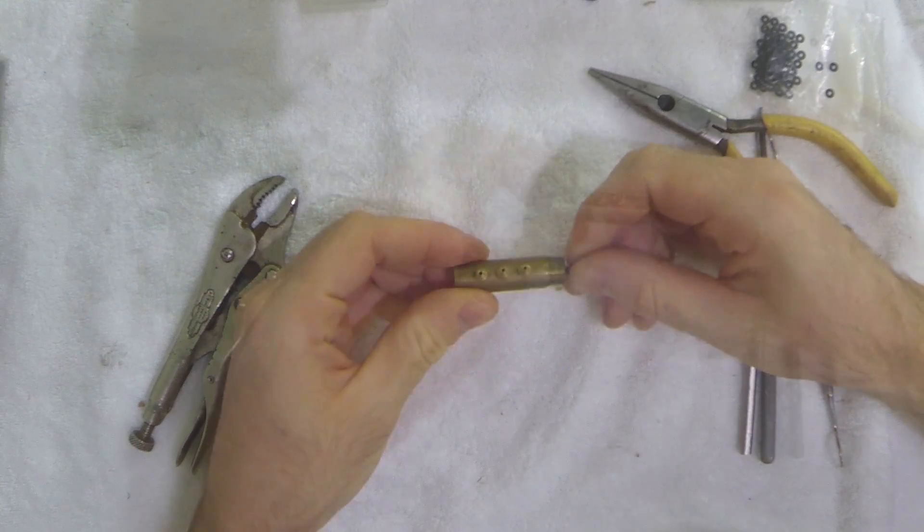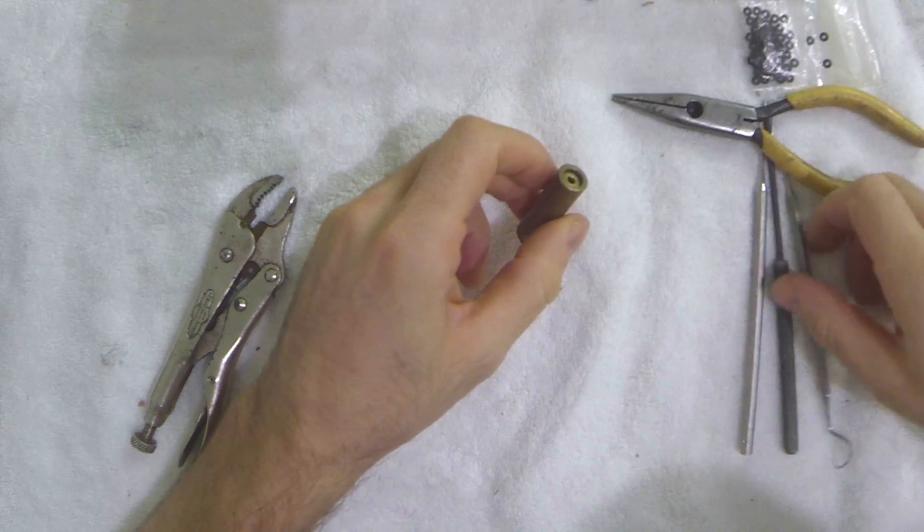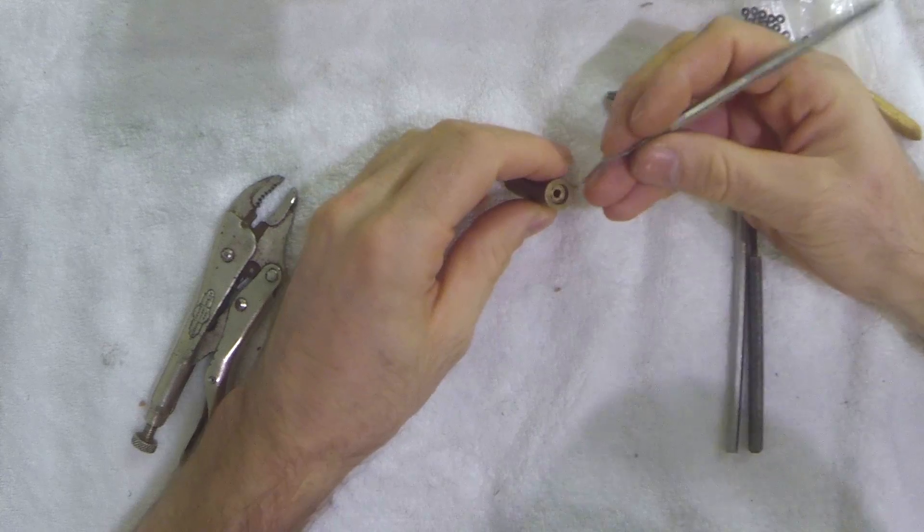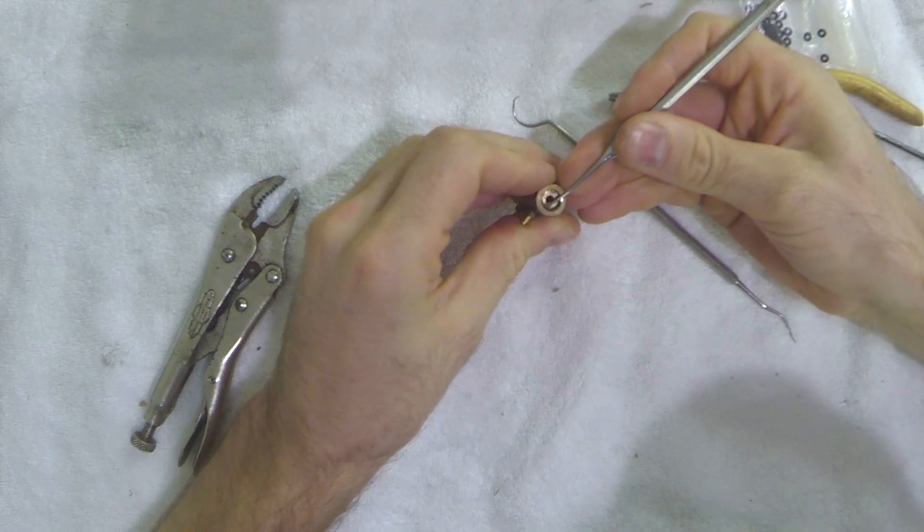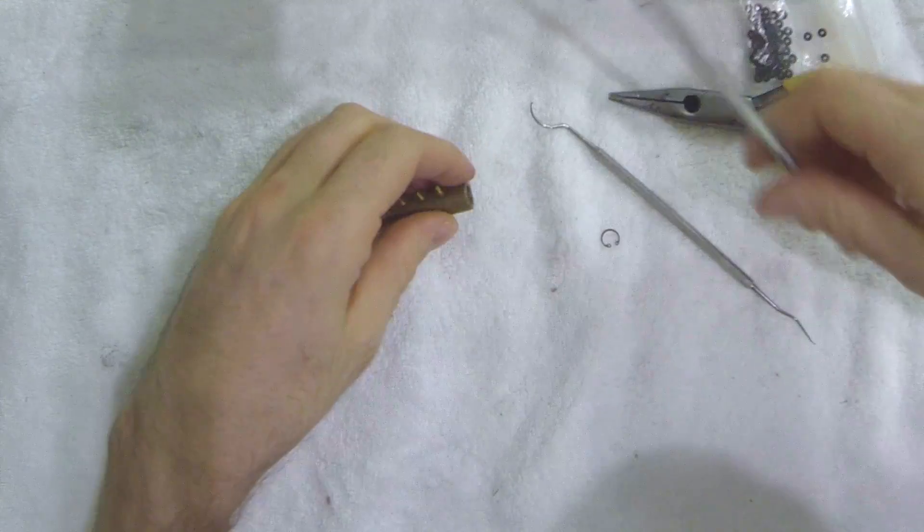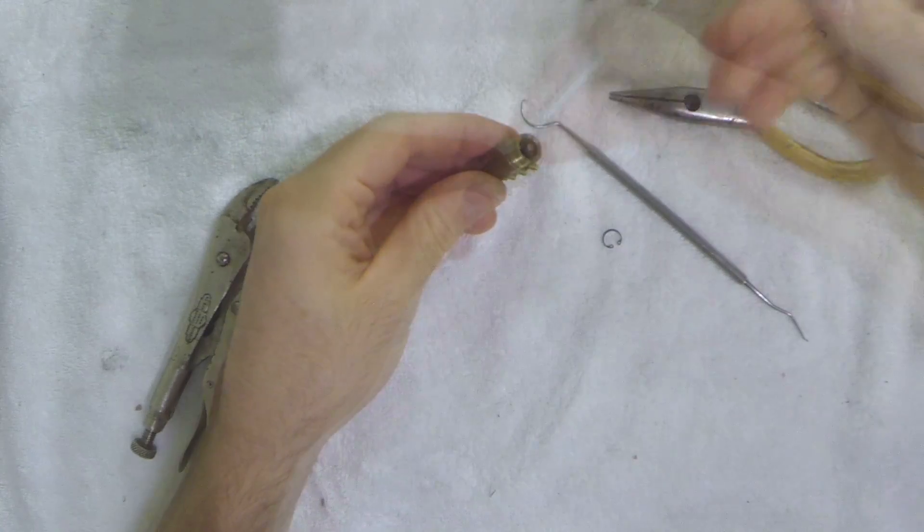Here's a stock WGP three-way we're going to rebuild. I remove the c-clip with my needle tool and just pop that out.